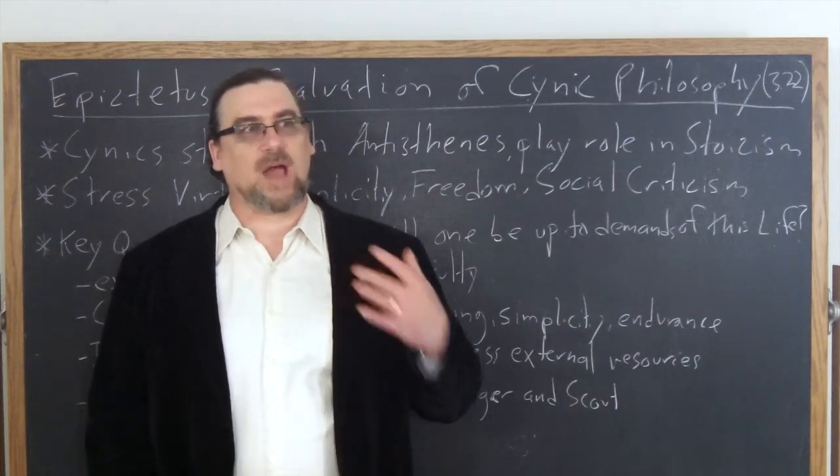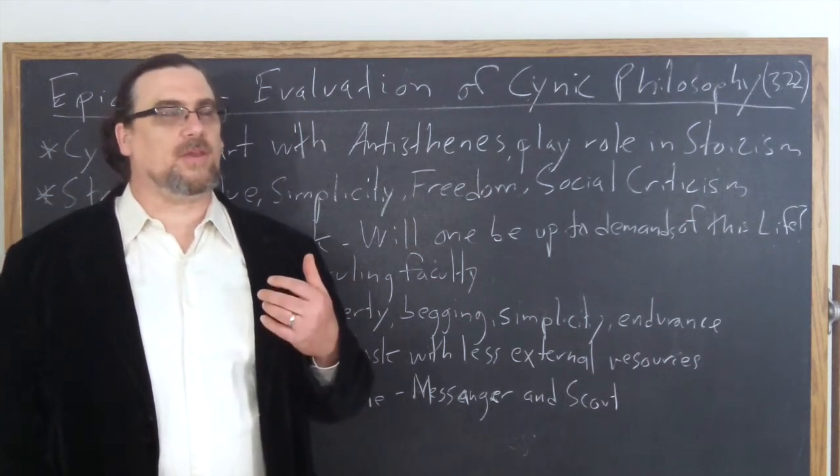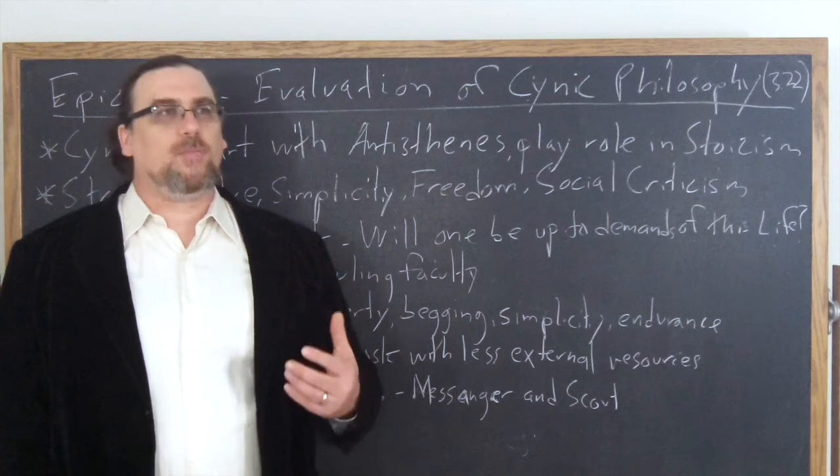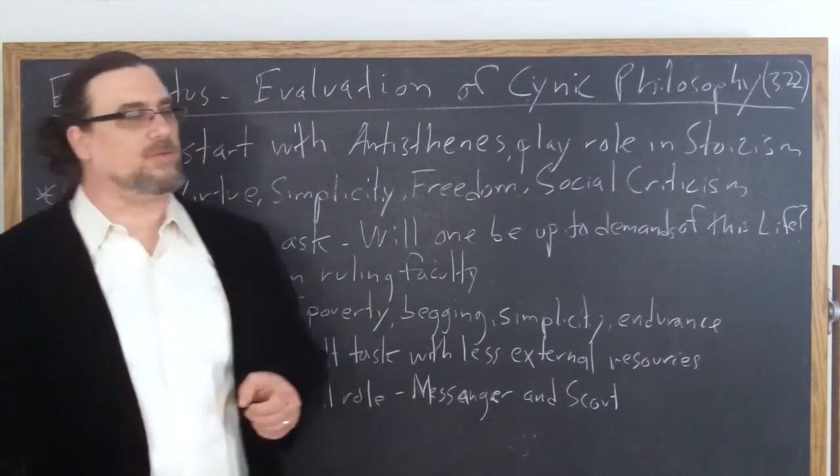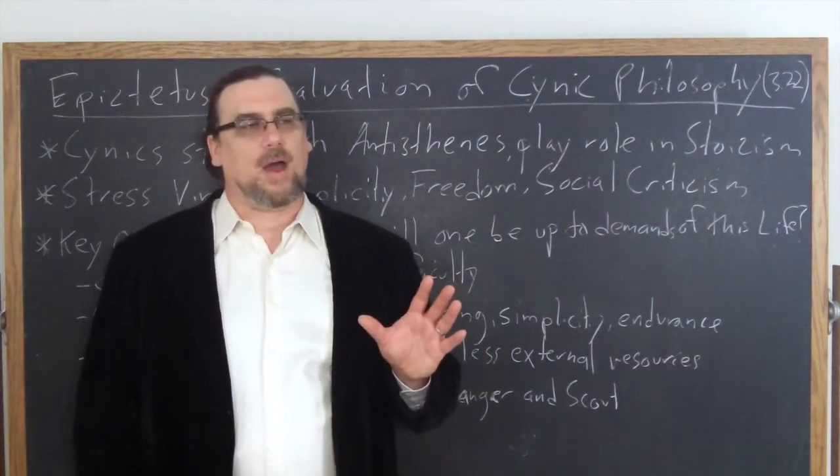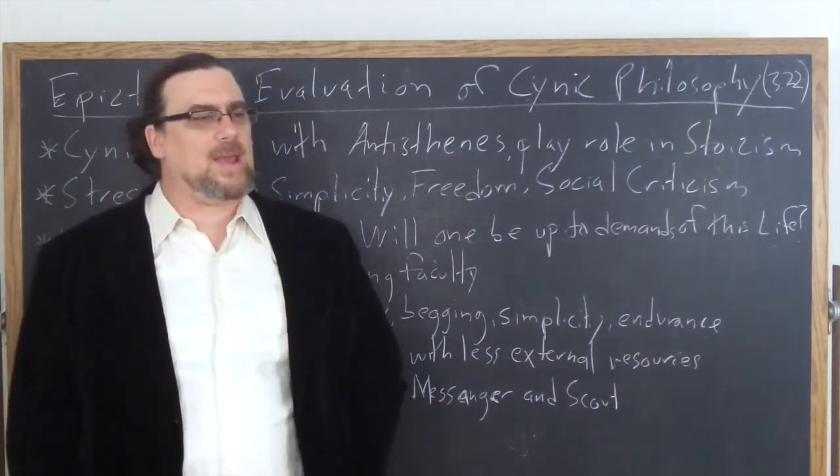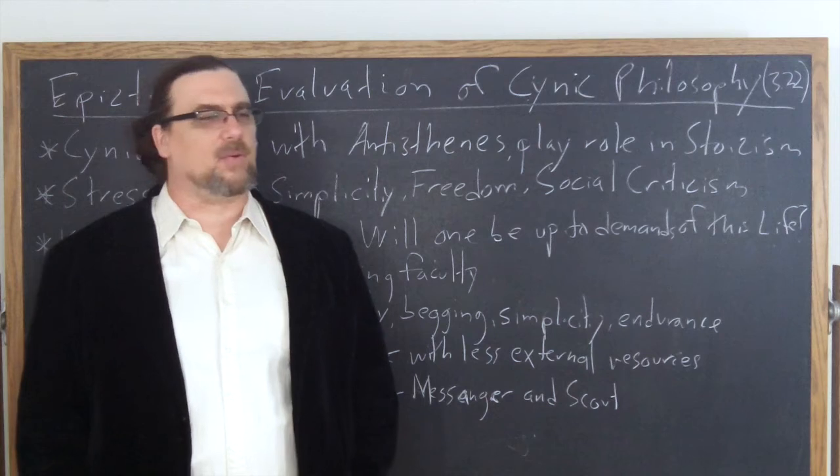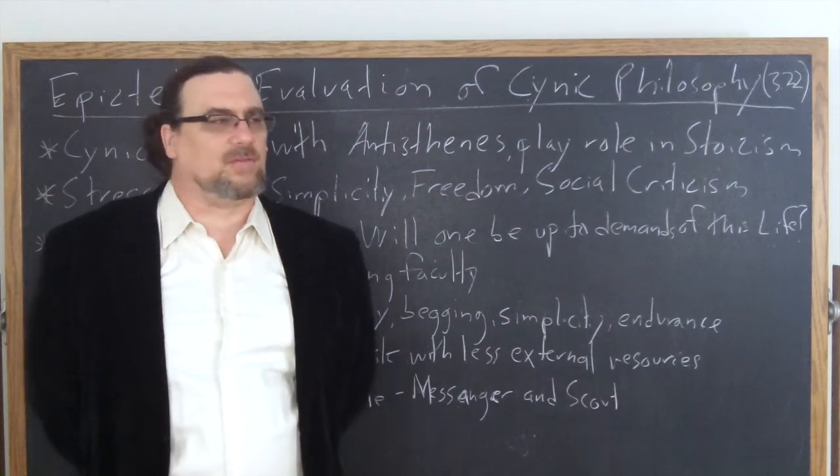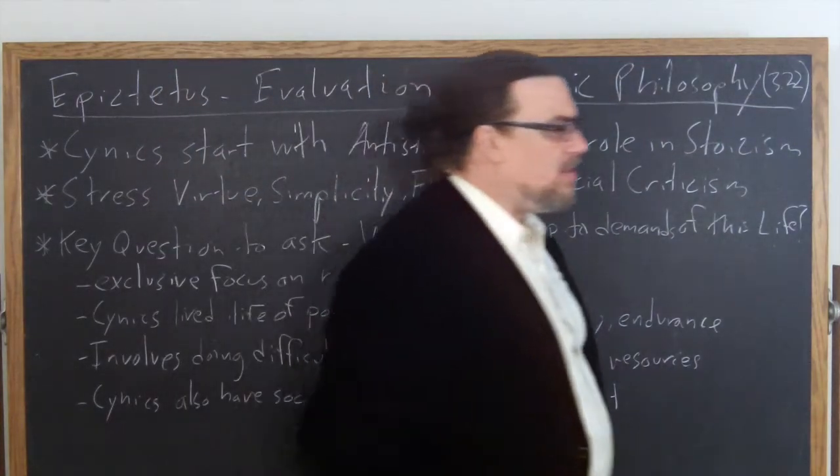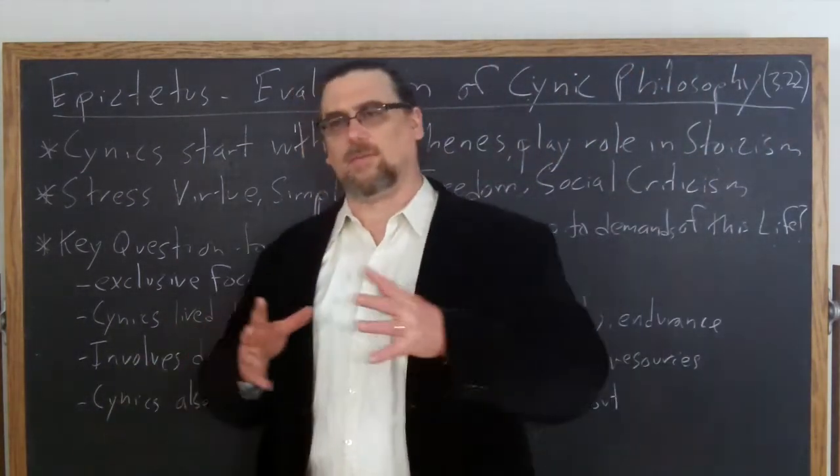Antisthenes took from Socrates the emphasis on virtue, and the idea that what's most important in life is to understand and to cultivate moral virtue in oneself. Possessions don't really matter. Family relations, not particularly important, particularly if they get in the way. Family, raising children, that's not really a central concern. Instead it's working out for oneself what the good is and living that. Trying to live a life in accordance with nature, trying to live a life of freedom, a life of simplicity. That's what he took from Socrates.